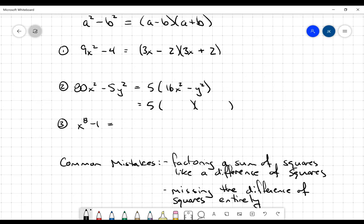The square root of 16x squared is going to be 4x, and the square root of y squared is just y. And so it'll be 5 multiplied by 4x minus y multiplied by 4x plus y. It's just very robotic. I see the difference of squares, I write it in terms of its binomial conjugates.